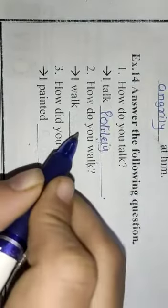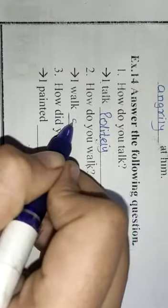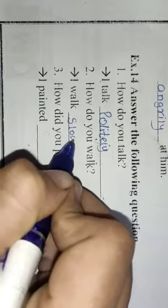Number 2. How do you walk? How do we walk? I walk slowly. So we have to write here slowly.